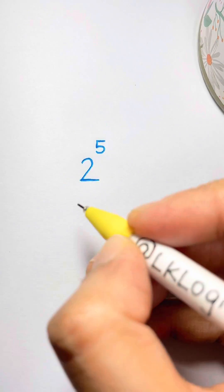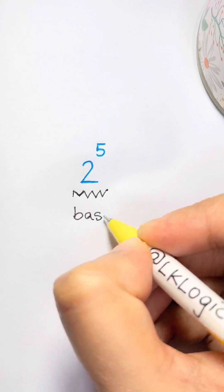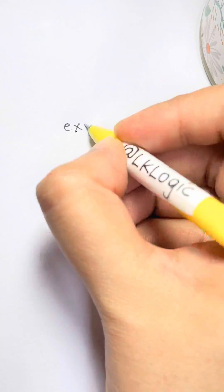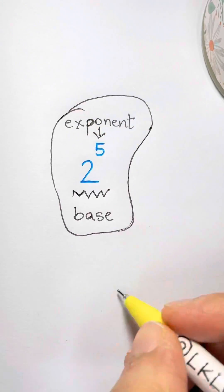Five things about exponents that you should know. First, whenever you see something that looks like this, the number is called the base and this little number is called the exponent, and the entire thing is called the power.